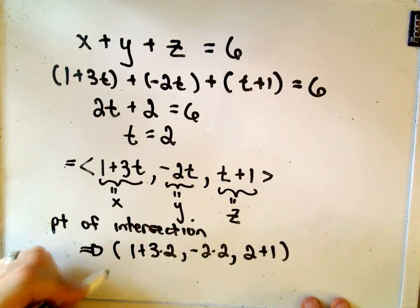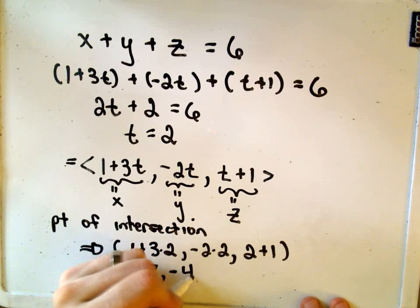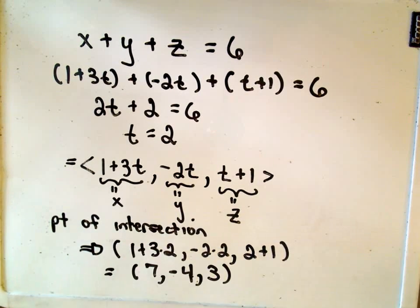Well, we can certainly simplify that down. It looks like it would be 7, -4, and 3. That would be your point of intersection.